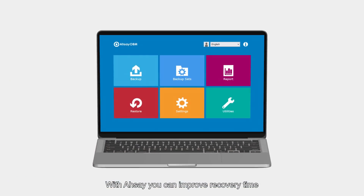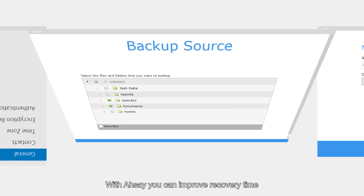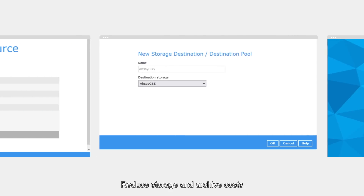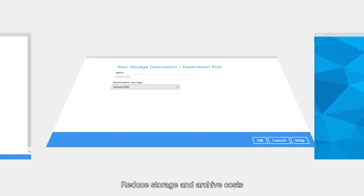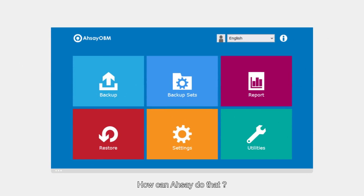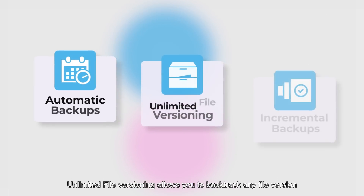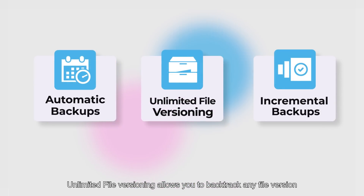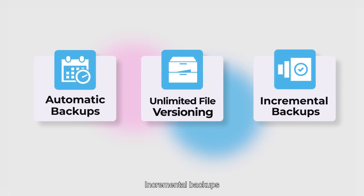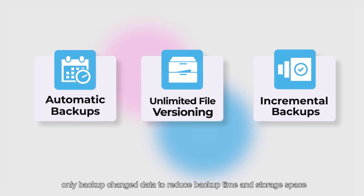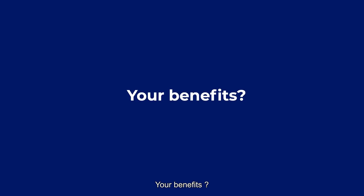With RSA, you can improve recovery time and reduce storage and archive costs. With automatic backups, unlimited file versioning allows you to backtrack to any file version. Incremental backups only back up changed data to reduce backup time and storage.